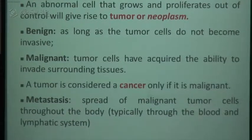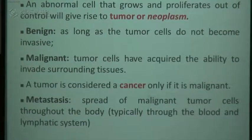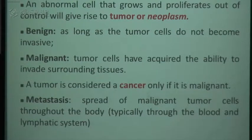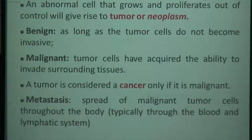By definition, a tumor or neoplasm is an abnormal cell that grows and proliferates out of control. As long as tumor cells do not become invasive, we call it benign. If the tumor cells have acquired the ability to invade the surrounding tissues, we call it malignant. Cancer is a tumor only when it is malignant — meaning it has acquired the ability to invade neighboring or surrounding tissues.